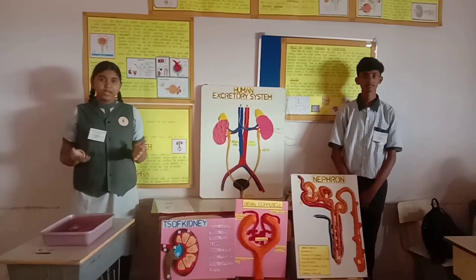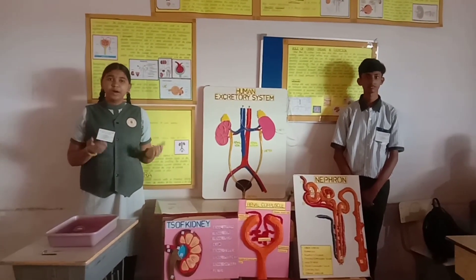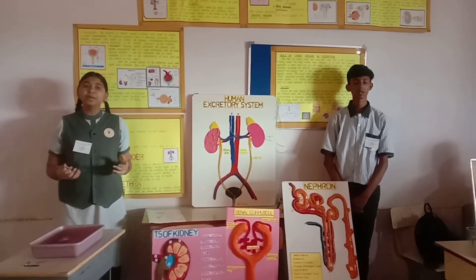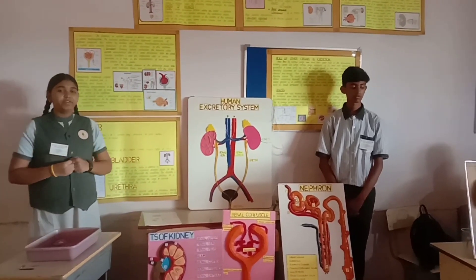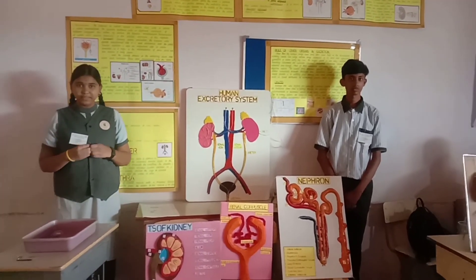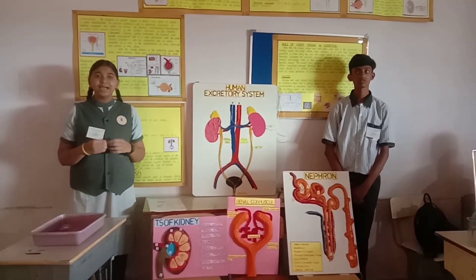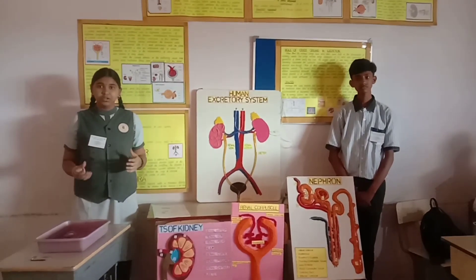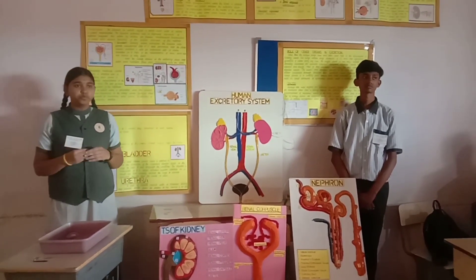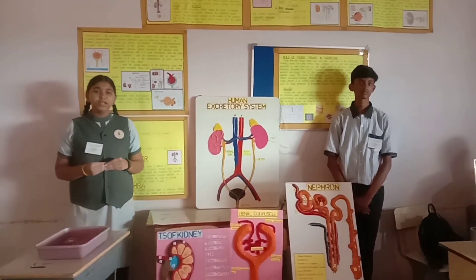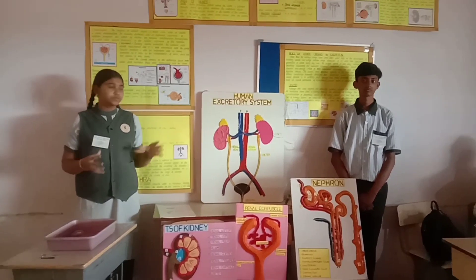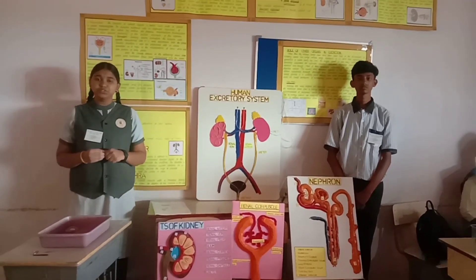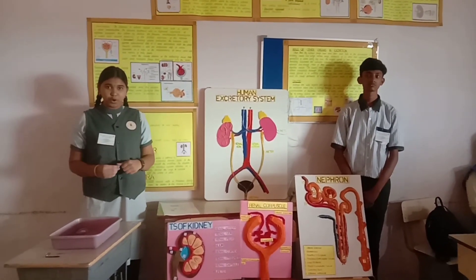Animals accumulate urea, uric acid, ammonia, phosphate, etc. by metabolic activities performed by them or by other means such as excess ingestion. These materials are very harmful to our body and therefore it is very necessary to remove the nitrogenous waste out of the body.